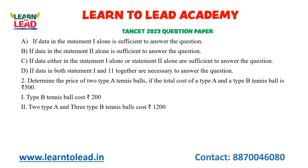Next question: determine the price of Type A tennis ball. Statement 1: The cost of one Type A ball and one Type B ball together is 500, and Type B ball costs 200. So Type A equals 500 minus 200, which is 300. You can answer with Statement 1 alone.